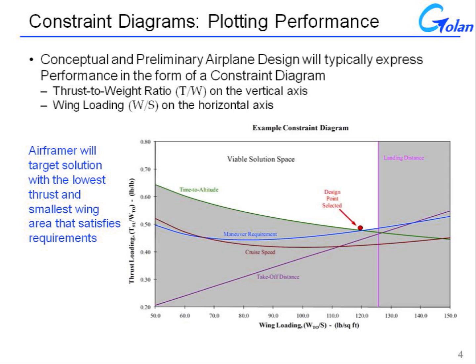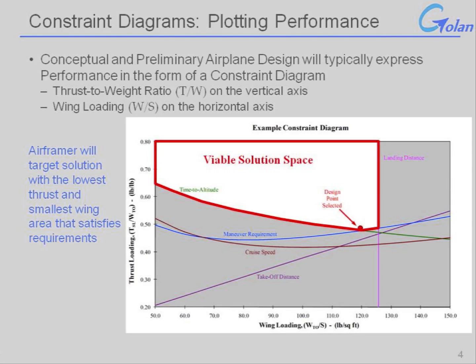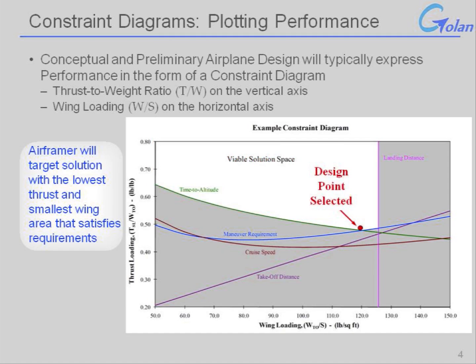These lines will define, between them, a solution space within which we have combinations of thrust loading and wing loading that meet all of the spec requirements. Within this solution space, the manufacturer will typically down-select to the configuration with the smallest thrust-to-weight ratio and the highest wing loading — that's the smallest wing area — that meets all of the requirements.